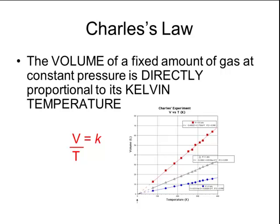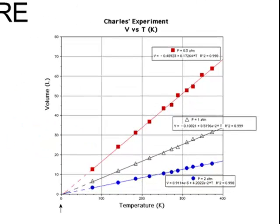The graph to the right shows a gas at three different pressures. The red line is at a pressure of half an atmosphere, whereas the blue line is a pressure of two atmospheres. So remember back to Boyle's law, if you have a low pressure, you will have a big volume, which is why the red line is up much higher. But if you have a high pressure, you will have a small volume, which is why the blue line is much lower.